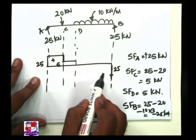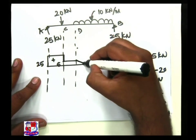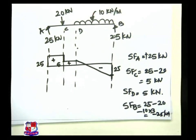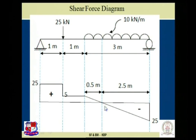These two points are joined by an inclined straight line — this side is plus, this side is minus. See how this diagram has been achieved: horizontal straight line, sudden drop, once again no load horizontal straight line, and for UDL it is an inclined straight line. The interesting point is the point at which the shear force is zero — this point we have to find out.